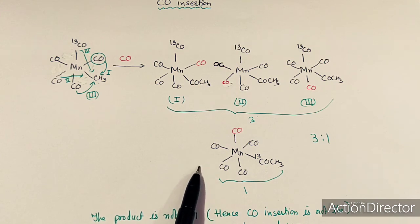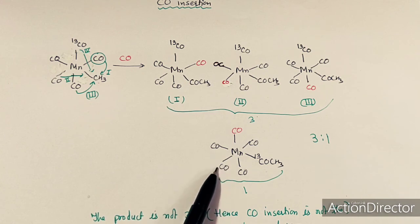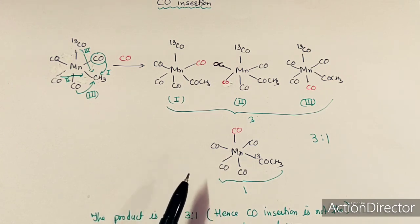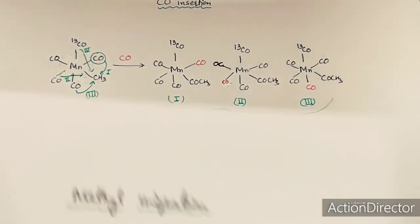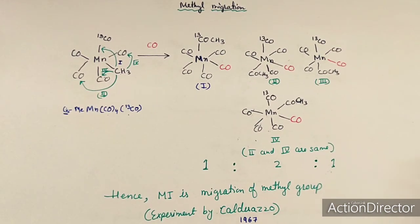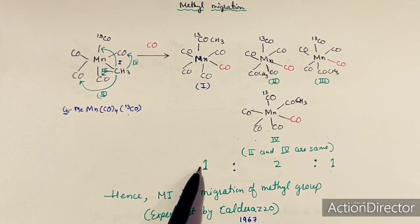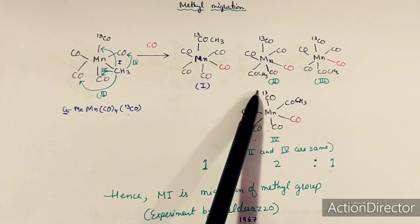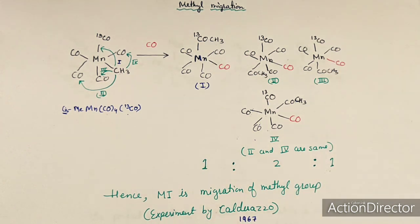Since the experimentally observed ratio was 1:2:1 and not 3:1, Calderazzo concluded that migratory insertion reactions occur via methyl (or alkyl) migration, not via CO insertion. This classic experiment established the alkyl migration mechanism for migratory insertion reactions in organometallic chemistry.